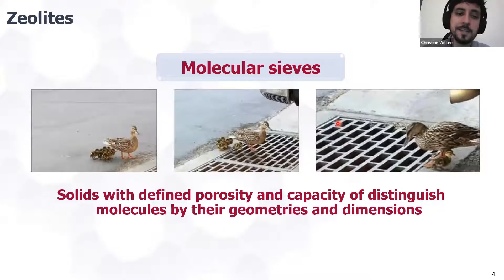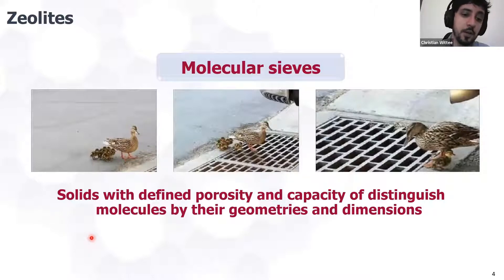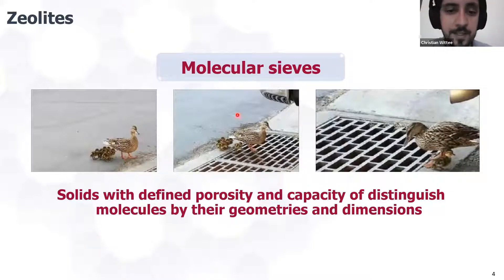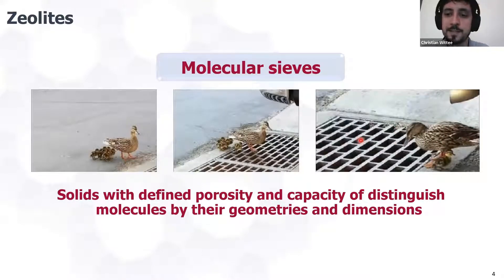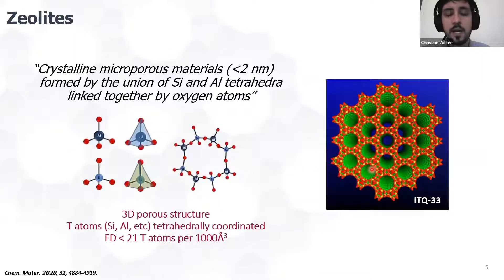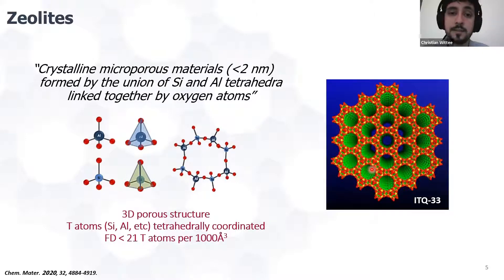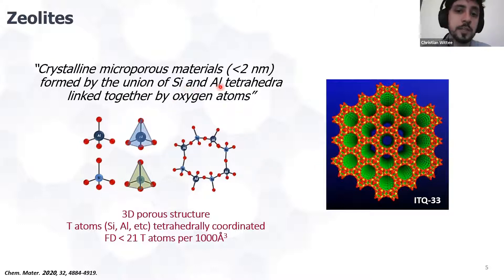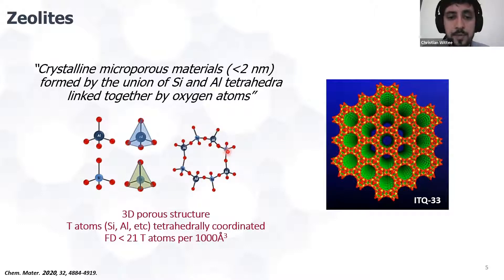Molecular sieves are solids with defining porosity and the capacity to distinguish molecules by their geometries and dimensions. Here you can see the ducts; we can discriminate molecules by the size of the pores. Zeolites are crystalline microporous materials with less than 2 nanometers of size, formed by the union of silicon and aluminum tetrahedra linked together by oxygen atoms. Here you have an example of the pore aperture of zeolites.